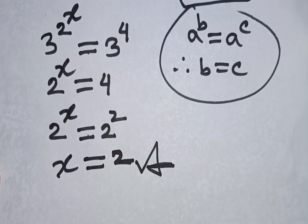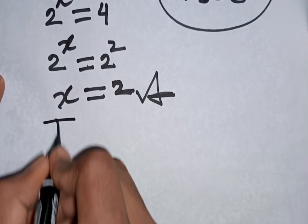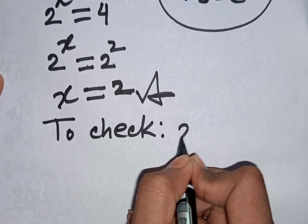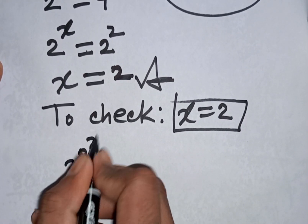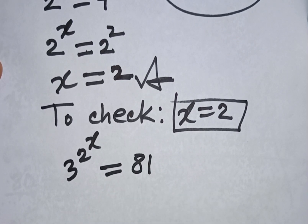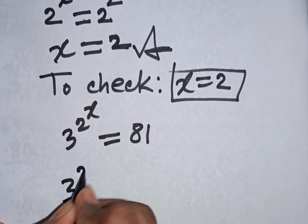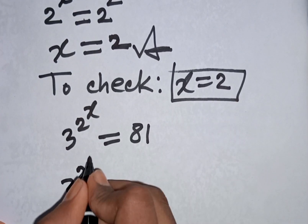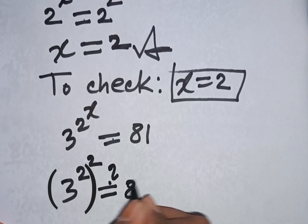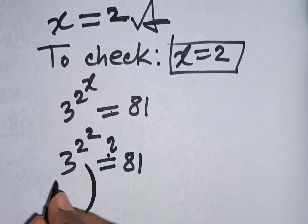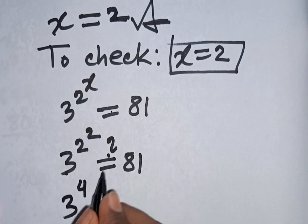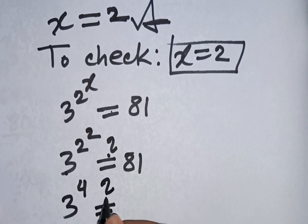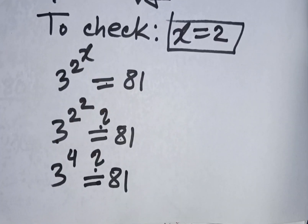Now let's check, for x is equal to 2, our equation is 3 power 2 power x is equal to 81. Substituting x equals 2: 3 power 2 power 2, which gives 3 power 4, is equal to 81.